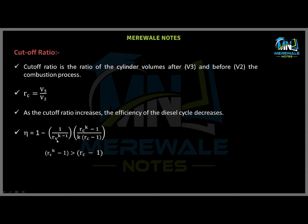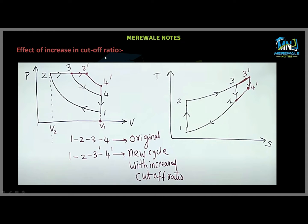We can also see this decrease with the help of the diagram. As we increase the cutoff ratio, point 3 shifts to 3-dash, extending the heat addition from 2-3 to 2-3-dash. The heat rejection part extends from 4-1 to 4-dash-1, and the isentropic expansion shortens from 3-dash to 4-dash. In the TS diagram similarly, the heat addition part 2-3 increases and the heat rejection part also increases. Since efficiency equals 1 minus QR over QS, both QR and QS are increasing.